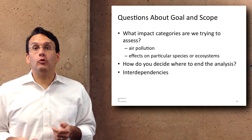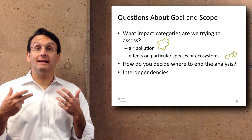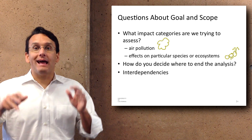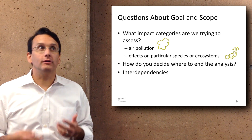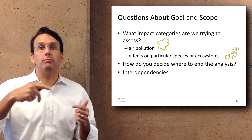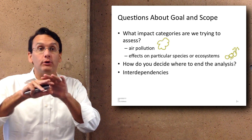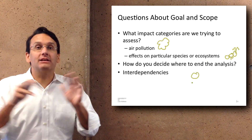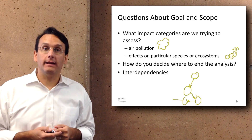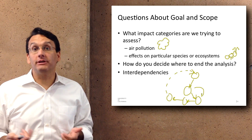With regard to goals and scope, the core question is: what impact categories are you trying to assess? For example, are we assessing air pollution? Are we assessing effects on particular species or ecosystems? One real challenge with life cycle assessment is how do you decide where to end the analysis? In terms of the iPhone, are we assessing the change in quality of life of people who used to work in the post office before it laid them off because fewer letters were sent? Often it's not, because at the extreme, everything is connected to everything else in at least an indirect way. At some point you need to scope the problem — you can't deal with every possible interdependency that exists.